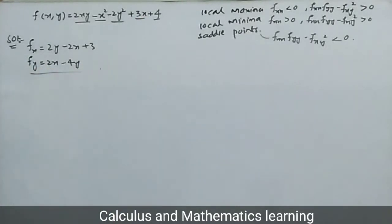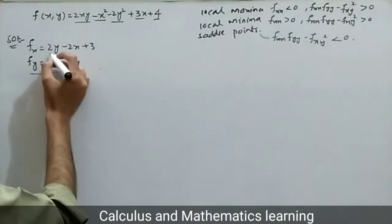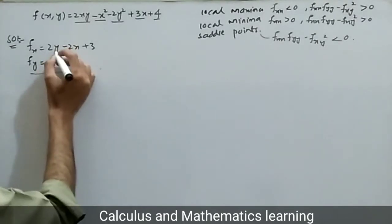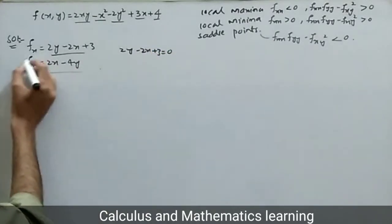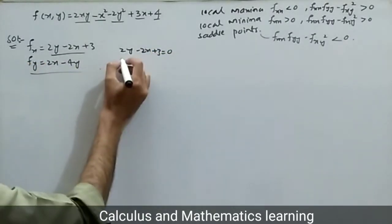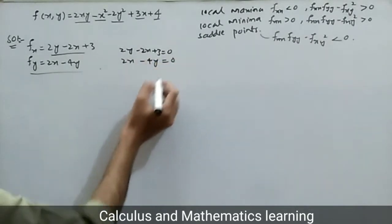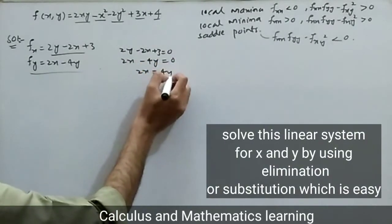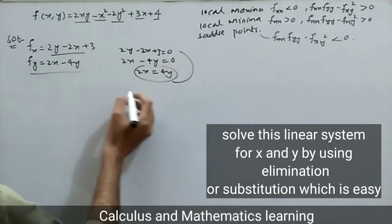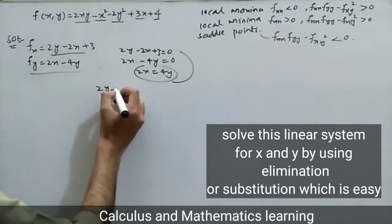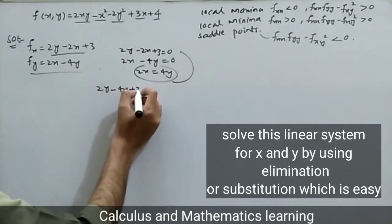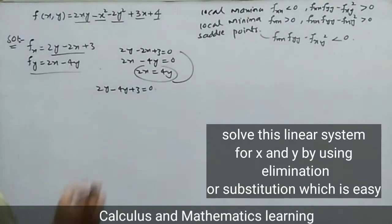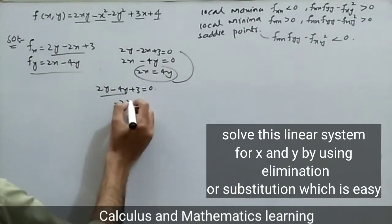For the critical points, we set the derivatives to zero. So fx = 0 gives: 2y minus 2x plus 3 equals zero. And fy = 0 gives: 2x minus 4y equals zero. From fy = 0 we get two x equals four y.